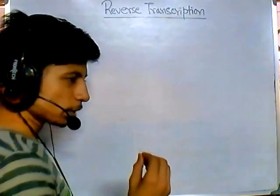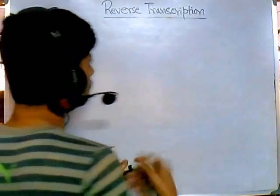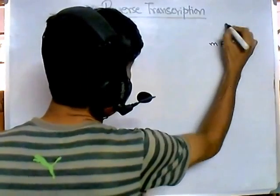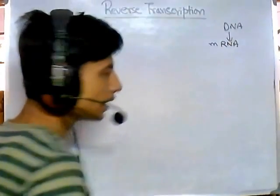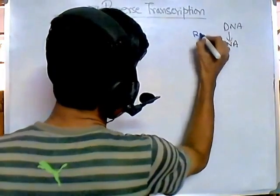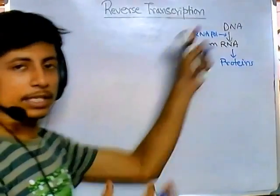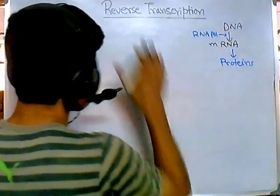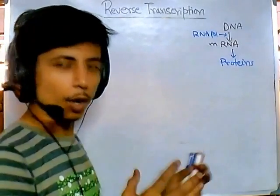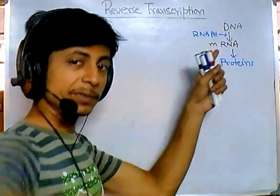Reverse transcription is a unique process because the normal process of transcription usually produces RNA or mRNA from a DNA molecule — that's called transcription. For this process to occur, we require an enzyme called RNA polymerase. From the mRNA, it is then translated into protein molecules, so this is the normal central dogma of biology.